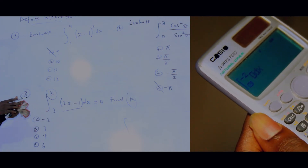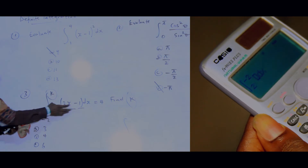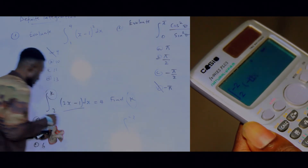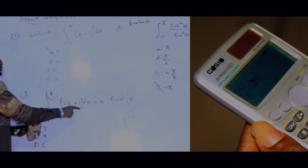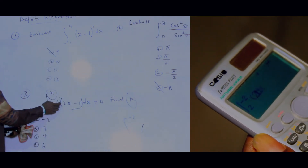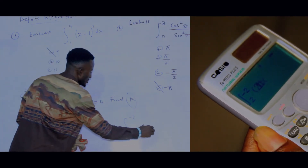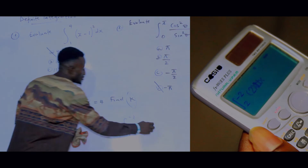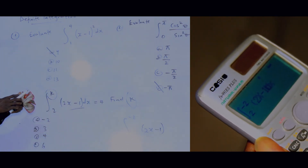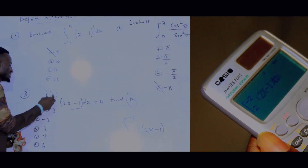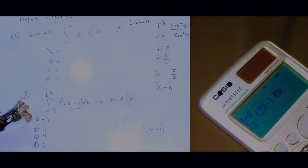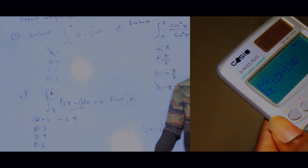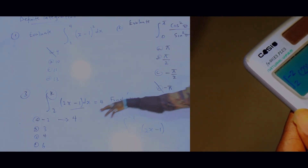Substitute each option for k — the one that gives 4 as the answer is the correct one. Start with option A, which is minus 2, as the upper limit. For the lower limit enter 2. Inside, the integrand is (2x − 1)², so open the bracket, press 2, then Alpha X, close bracket, then minus 1, close bracket, then square. Press equals and you observe the answer is 4.